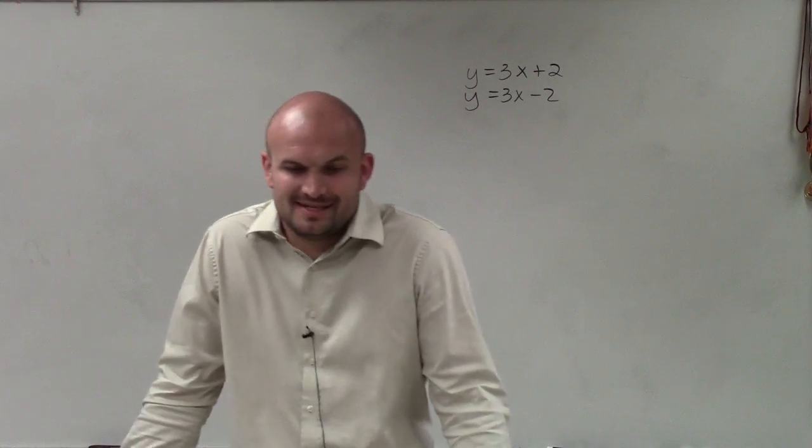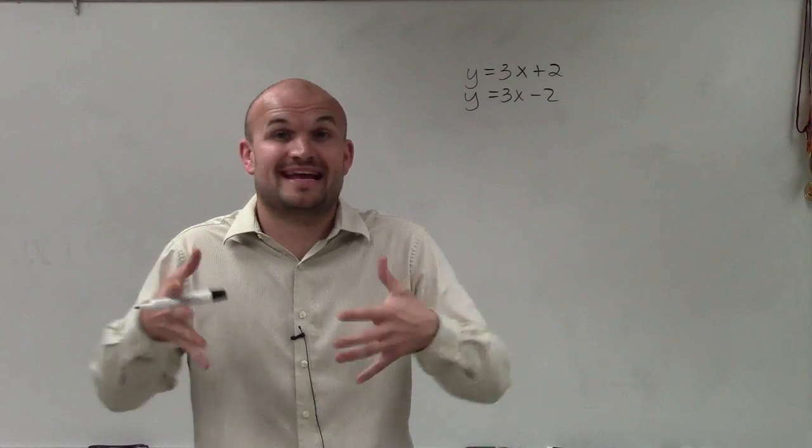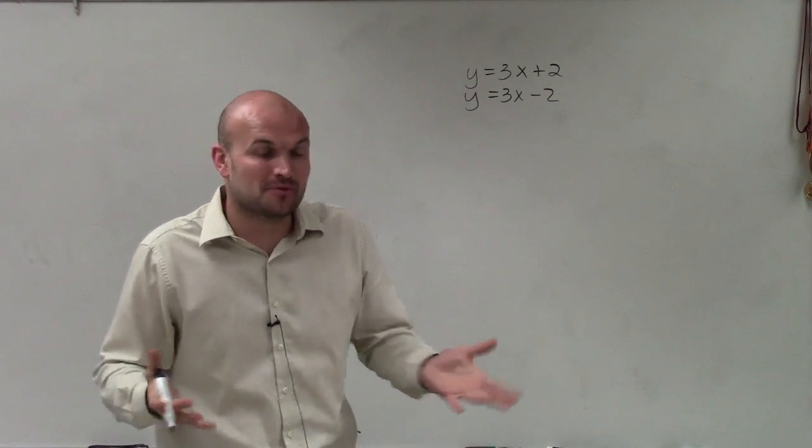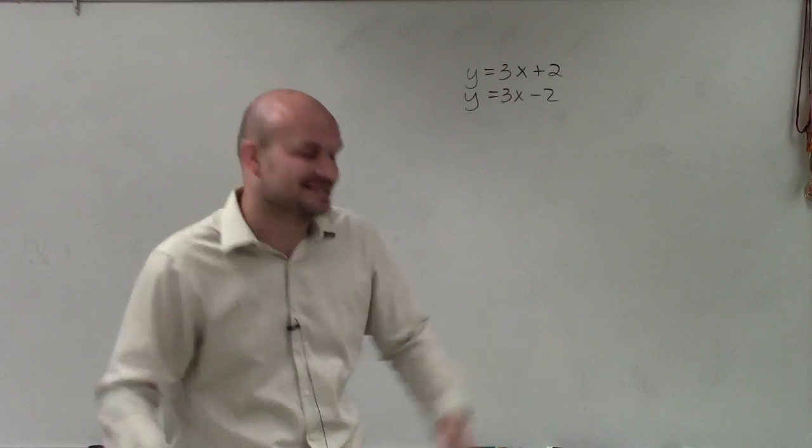But this one, it might be very easy to understand that these are already parallel, because we see that they have the same slope. And it's very in-your-face. They have the same slope. The same slope is 3. Therefore, we should automatically be able to see that this is going to have no solution, or what we call an inconsistent solution.